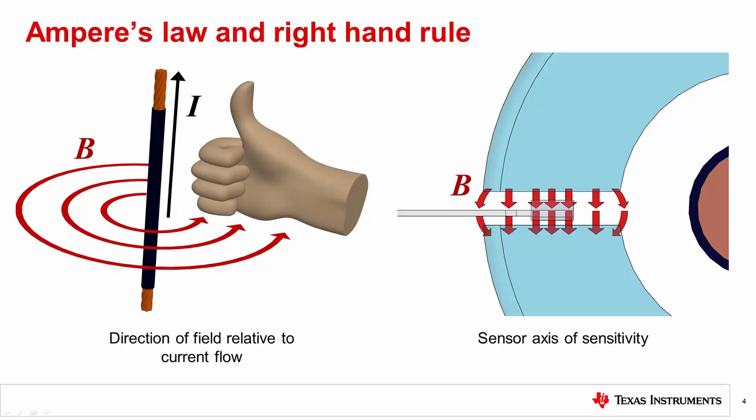For example, devices are usually sensitive to fields perpendicular to the face of their package. Therefore, such a device is not able to measure the current directly over a PCB trace, as the field at that spot is traveling across the package instead of into the package. Instead, the device should be moved next to the trace, where the field is traveling into the package.